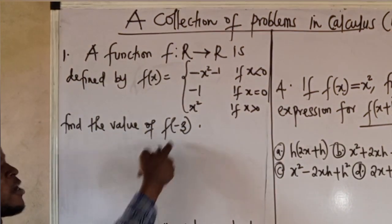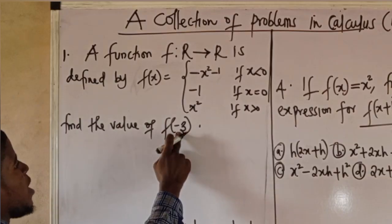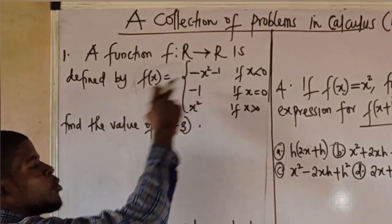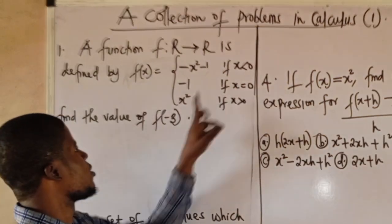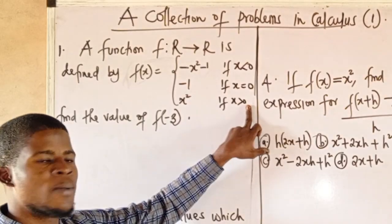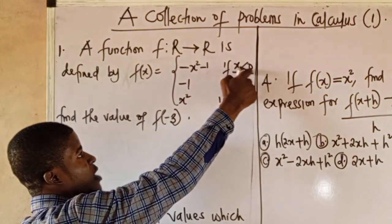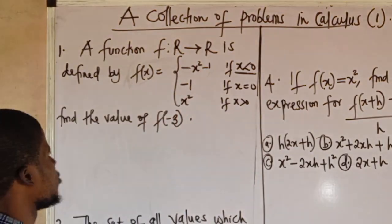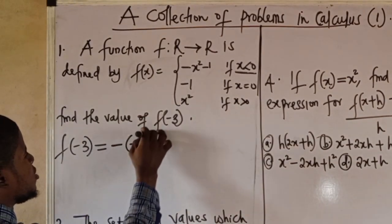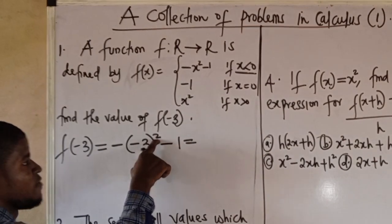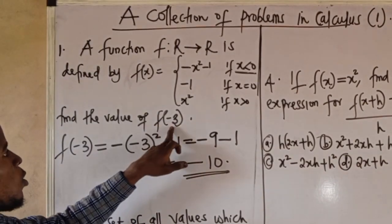The question is: find the value of f(−3). When dealing with functions like this, we have to determine which piece to use. Minus three is less than zero, so we use the first piece: f(x) = −x² − 1. Therefore, f(−3) = −(−3)² − 1 = −9 − 1 = −10. So f(−3) is equal to −10.